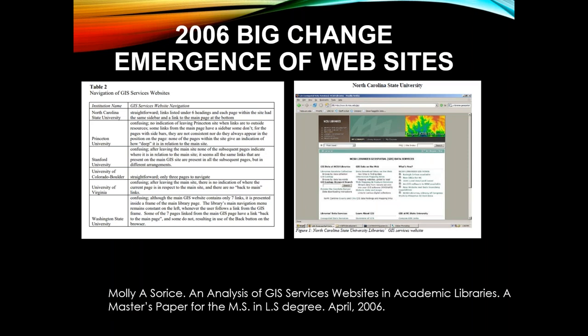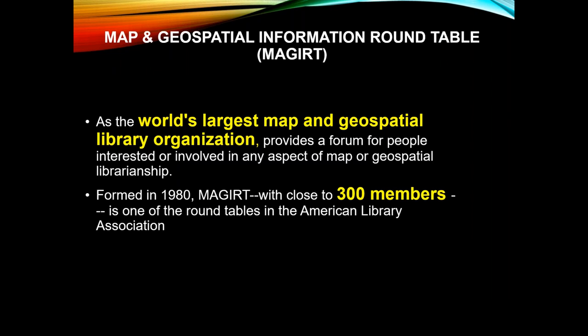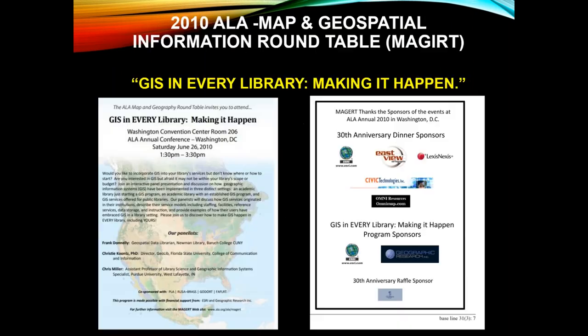In 2006, a big change came with the emergence of websites, making it possible for the library to be the focal point for GIS activities by at least posting resources. Moving ahead, MAGIRT — the Map and Geospatial Information Roundtable of the American Research Libraries — is the world's largest map and geospatial library organization. Founded in 1980, it has 300 members, a very active group. In 2010, they held a symposium in Washington where they said, 'GIS in every library, let's make it happen.' Esri was one of the sponsors, along with other geospatial organizations.